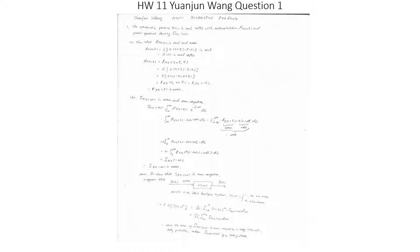Because of that, we prove that the autocorrelation R_xx(τ) is even. Part (b): to show that the power spectral density S_xx(ω) is even and non-negative. We know that S_xx(ω) is equal to the integral from negative infinity to infinity of R_xx(τ) times e^(−jωτ) dτ.